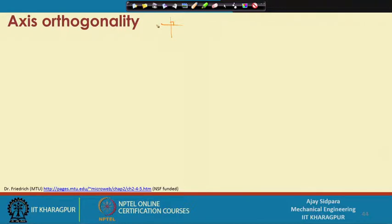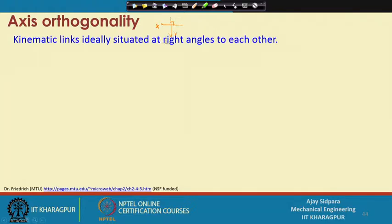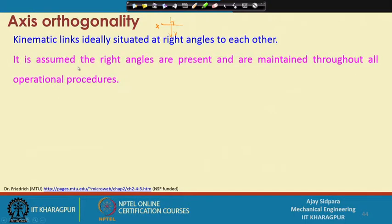This is axis orthogonality. What is axis orthogonality? We know that our x axis and y axis are perpendicular to each other. This is the x axis and this is the y axis. If that is not the case, what is going to happen? Kinematic links are ideally situated at right angles to each other — x, y, and z should all be at right angles to each other.